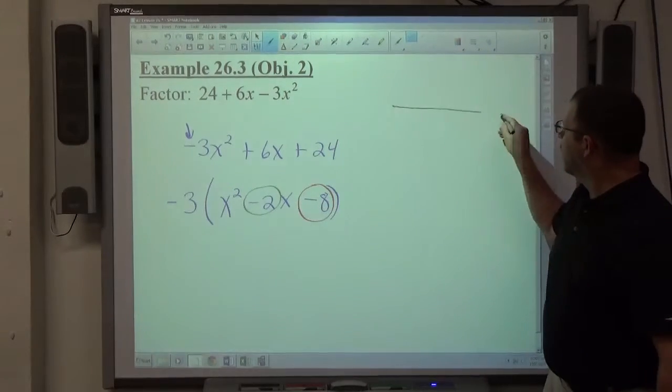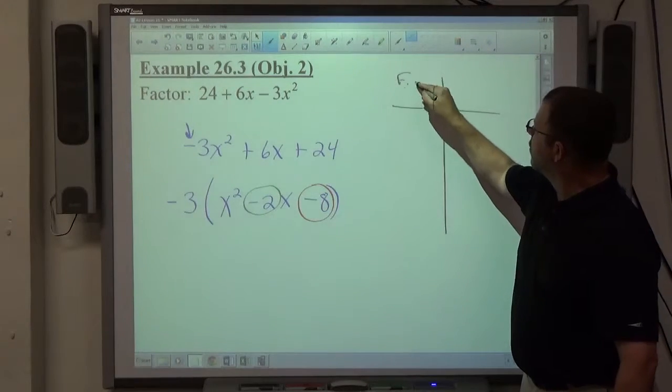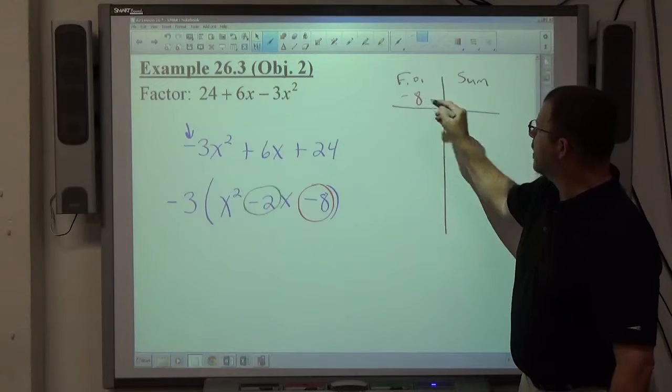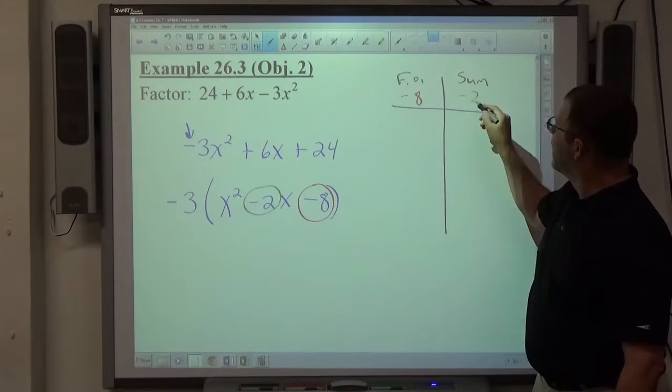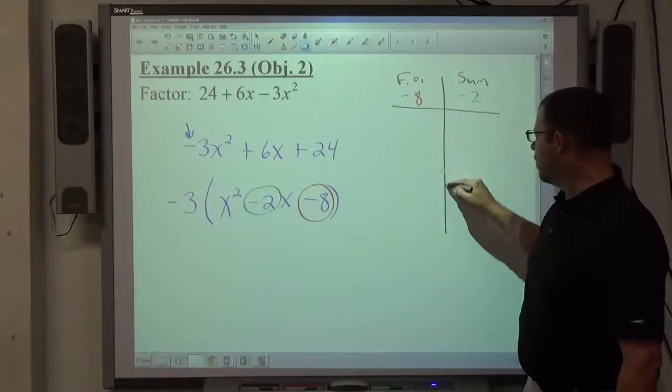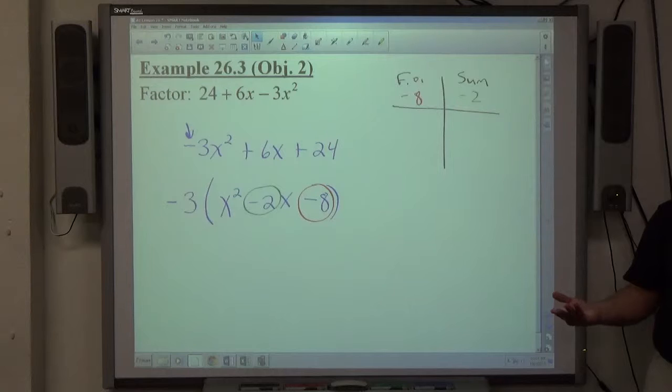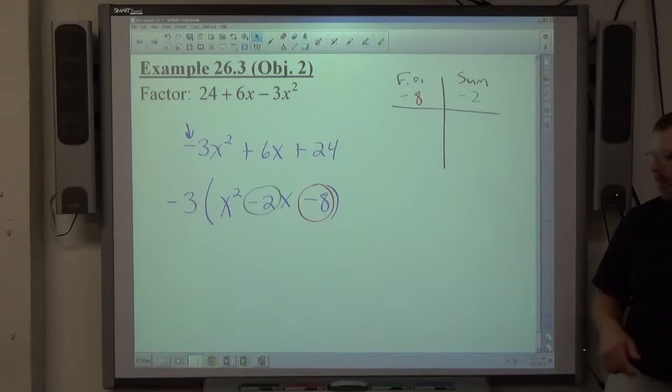And if we make the chart here, factors of and sum, we got -8 for factors and -2 for sum. It's the exact same scenario the last problem was. I'm trying to create a negative product, which is opposite sign numbers. We want the sum to be negative, which requires the bigger number to be negative.